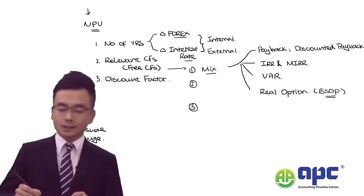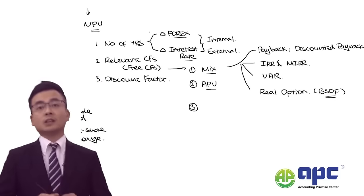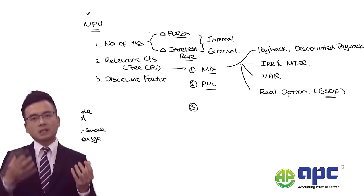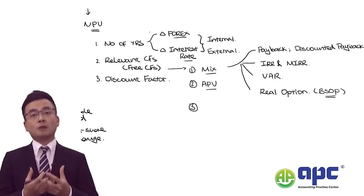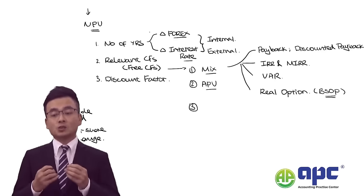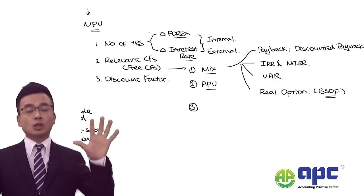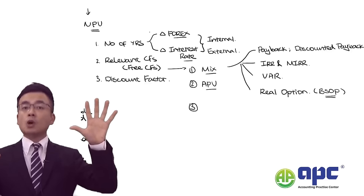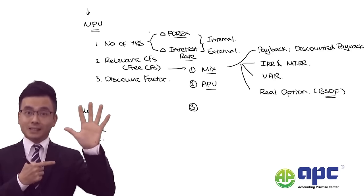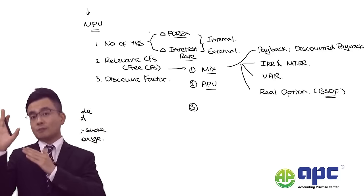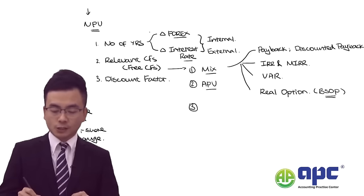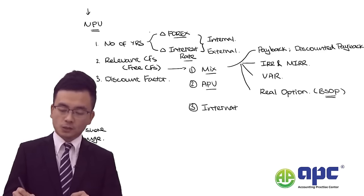The second category is combining free cash flow methodology with the adjusted present value (APV) analysis. One disadvantage of traditional NPV is that we mix operating and financing cash flows together and discount them using WACC. APV separates them: operating cash flows are discounted using the cost of equity ungeared, and financing cash flows are discounted at the risk-free rate.